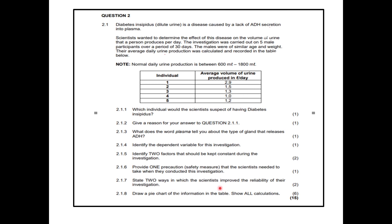Question 2.1.7: State two ways in which the scientist improved the reliability of the investigation. It says 'improved' — meaning it's already done, so you take it from the text. The experiment was carried out over a period of 30 days, and the average daily urine production was calculated and recorded. Those are the two ways in which reliability was improved.